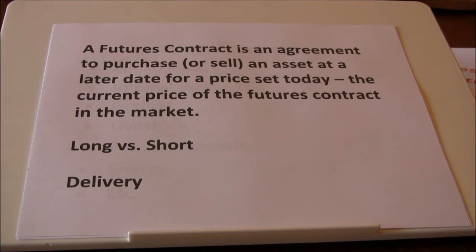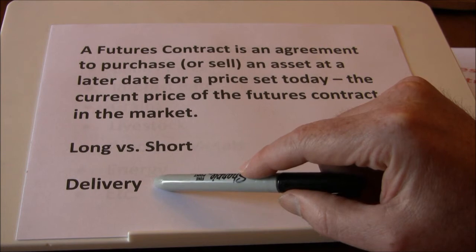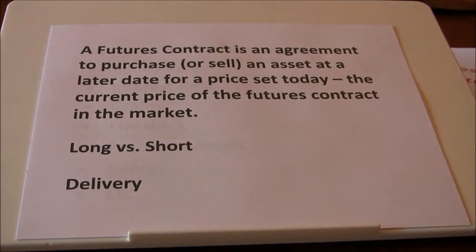For example, I might decide to buy a corn contract because I think the price of corn is going up, but one corn contract is for 5,000 bushels. I don't really want 5,000 bushels delivered to my house, so I'm not planning to take delivery. In that case, I would sell that contract sometime before expiration to cancel out my obligation. I'd have to sell it at whatever the current market price is — if corn went up like I hoped, I'd make a profit; if corn went down, I'd lose money.